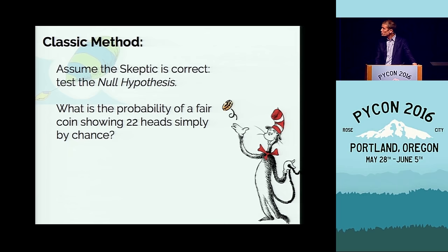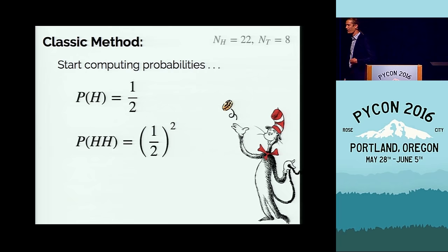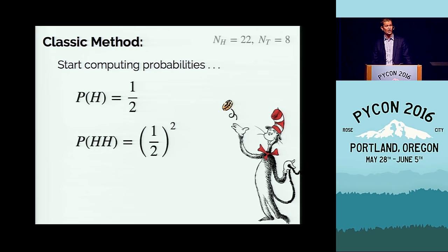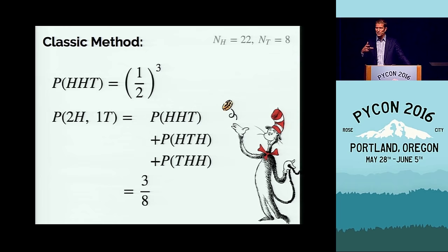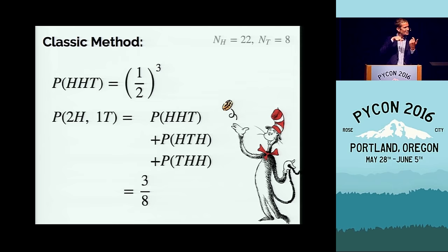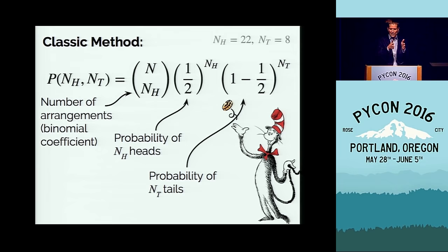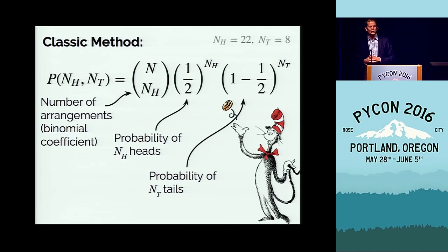Going back to your high school days, the probability of a coin toss is 50%. The probability of two heads in a row is 50% squared. Two heads followed by a tail is 50% cubed. But if you're talking about two heads and a tail in any order, you multiply by the number of arrangements. From this simple thought process, you end up with a formula — the number of arrangements of heads and tails times the probability of heads to the N — the binomial distribution.